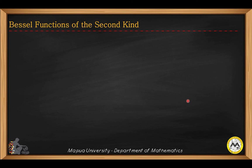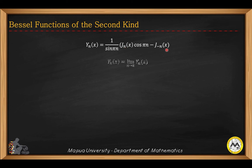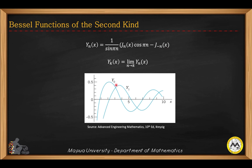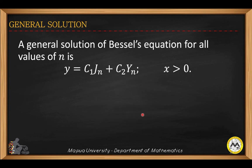Now we introduce the Bessel functions of the second kind, which complete the general solution of Bessel's equation. The second-kind solution is expressed in terms of the first-kind solution. The first two second-kind solutions at n equals zero and n equals one are shown. The general solution of Bessel's equation in terms of two linearly independent solutions is y(x) equals c1 times J sub n plus c2 times Y sub n, where x must be greater than zero.